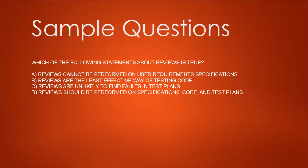Fourth question: Which of the following statements about reviews is true? A) Reviews cannot be performed on user requirements. B) Reviews are the least effective way of testing code. C) Reviews are unlikely to find faults in test plans. D) Reviews should be performed on specification, code, and test plans. Option A is false — reviews can be performed on user requirements. Option B is false — reviews are not the least effective way. Option C is false — reviews can find faults in test plans. Option D is true — reviews should be performed on specification, code, and test plans. So the answer is D.